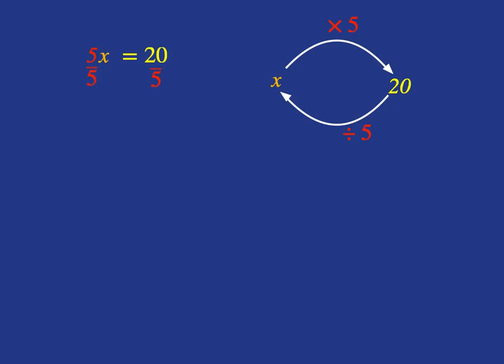And 5 divided by 5 is going to be 1, so you just get back to the plain x you wanted, and then 20 divided by 5 is 4, and so we have our solution to the equation.